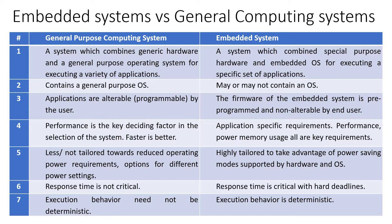A general purpose system has a general purpose operating system. An embedded system may or may not even have an operating system — if it does, it may be a real-time operating system, which we will cover in further modules. Also, in general computing, applications are alterable by the user — like installing apps on a laptop. But in embedded systems, firmware cannot be altered easily; it's very rare and takes considerable effort.